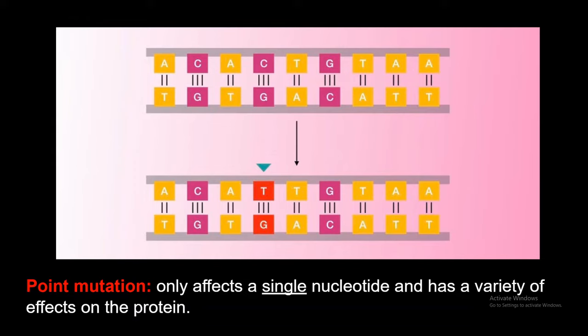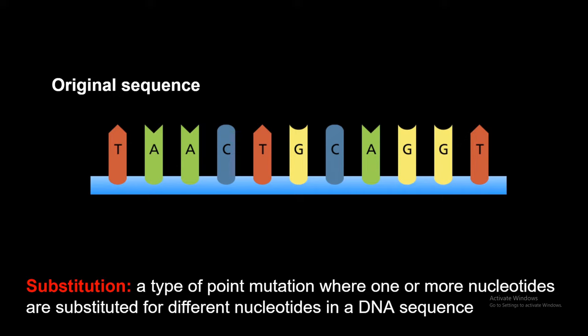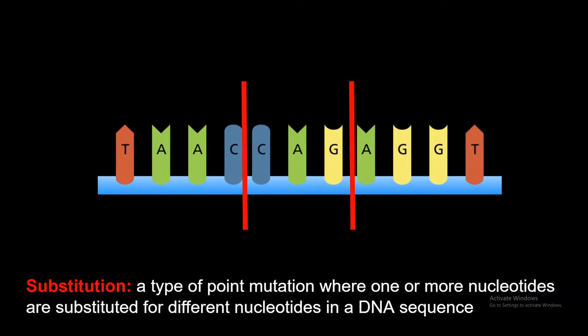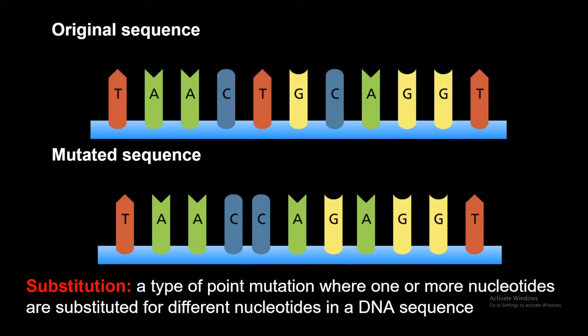Then from here, we have our point mutation. Instead of having one or more, this is actually going to be just one. And it has a variety of effects on the proteins. A substitution is any type of point mutation where one or more nucleotide is substituted for different nucleotides in a DNA sequence. Here's an original sequence. And we're substituting these three nucleotides here. We went from T-A-A-C-T-G to T-A-A-C-C-A. It didn't change the frame. It's still the same number of nucleotides. It's just a different amino acid, which could be detrimental or not.